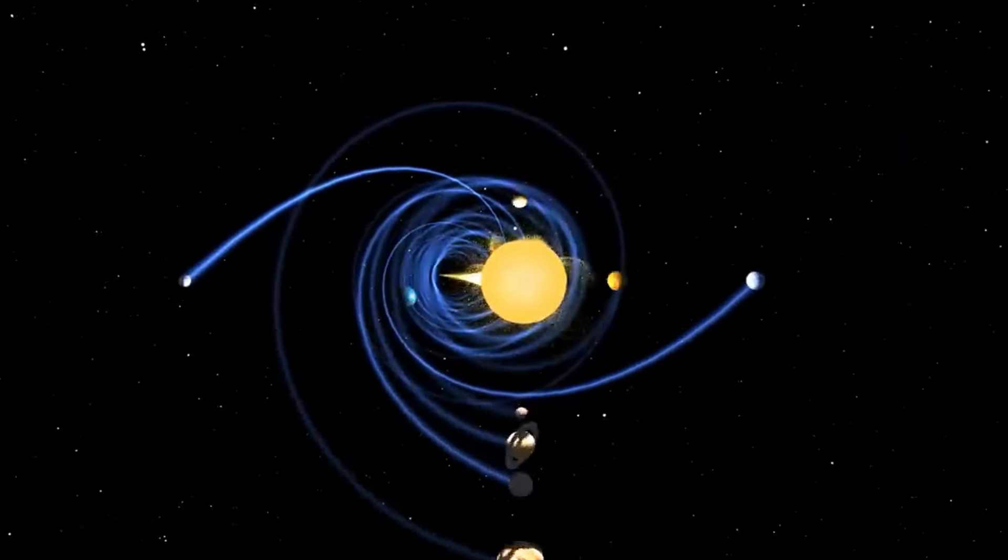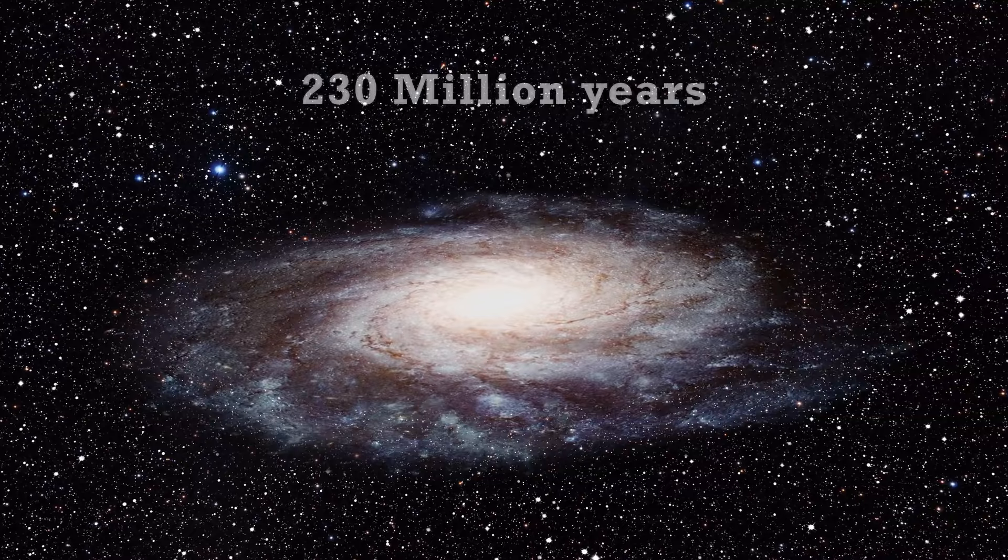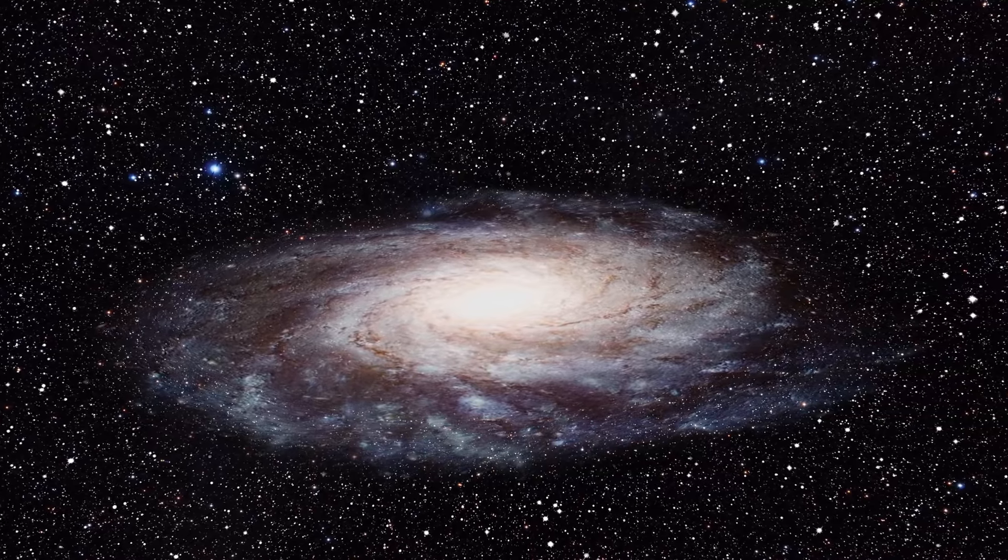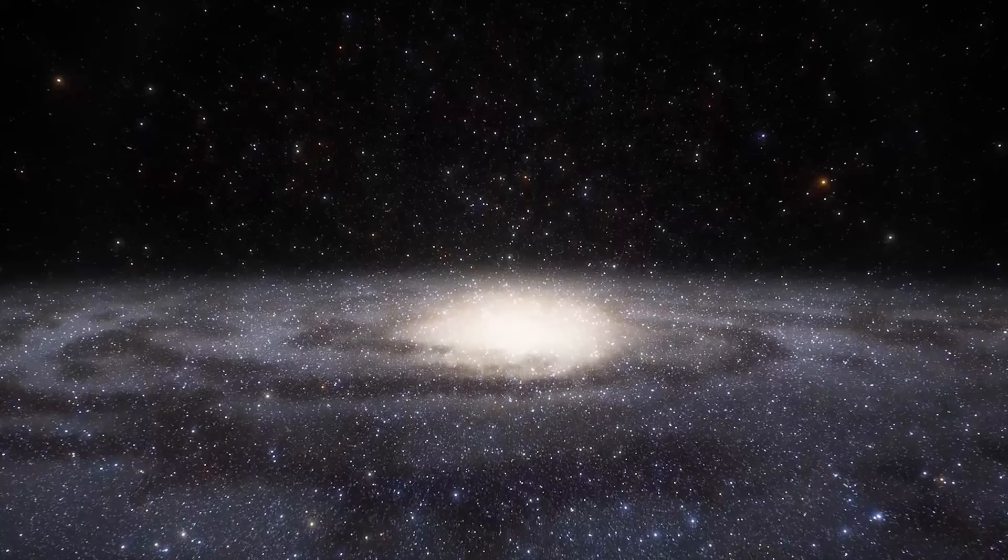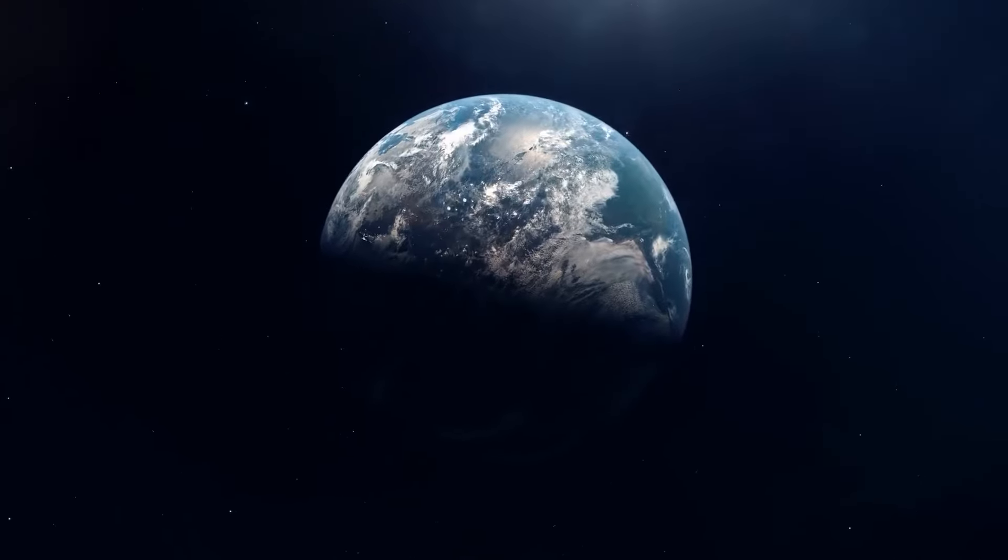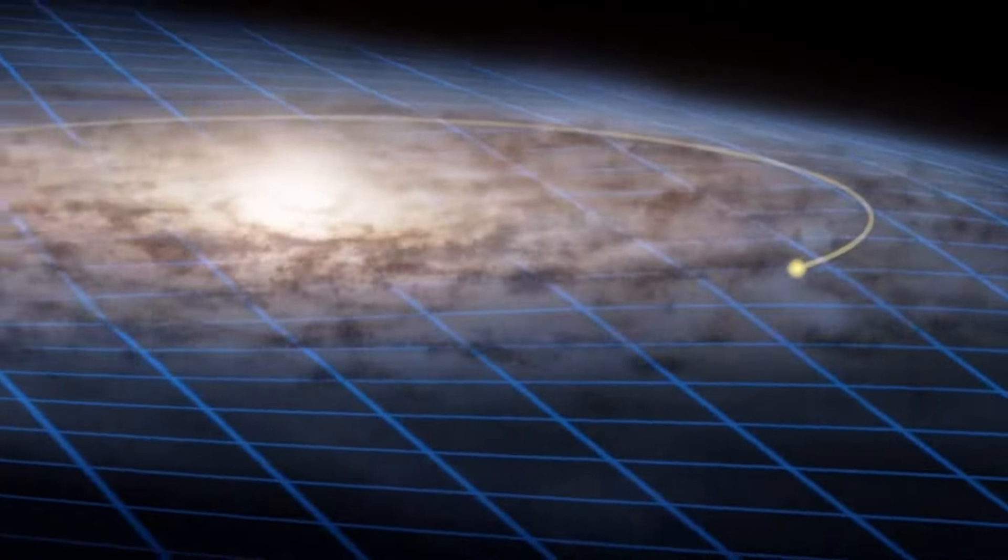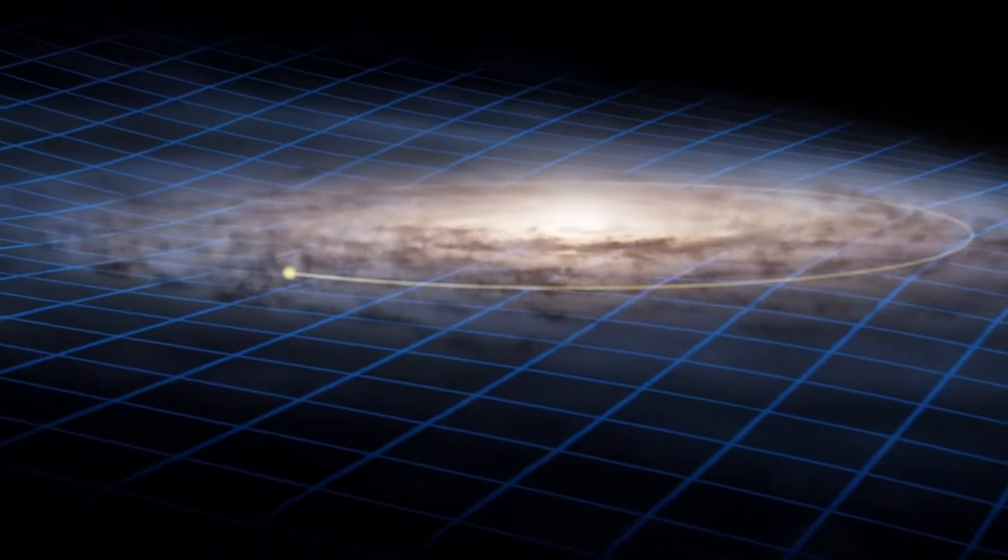Despite moving at such high speed, our solar system takes approximately 230 million years to complete a single revolution around the galaxy. The last time our planet was in this position, dinosaurs were just emerging and mammals were yet to evolve. One complete orbit of the Sun around the galaxy is called a galactic year.